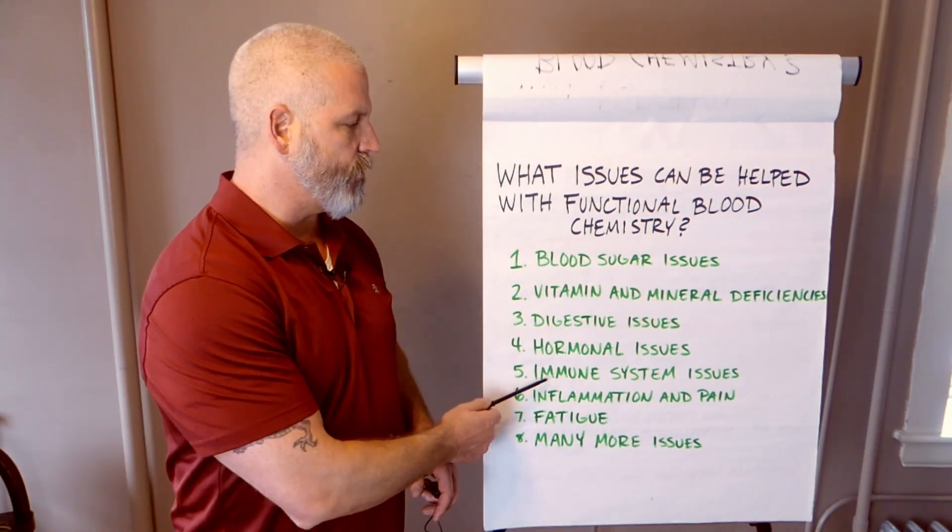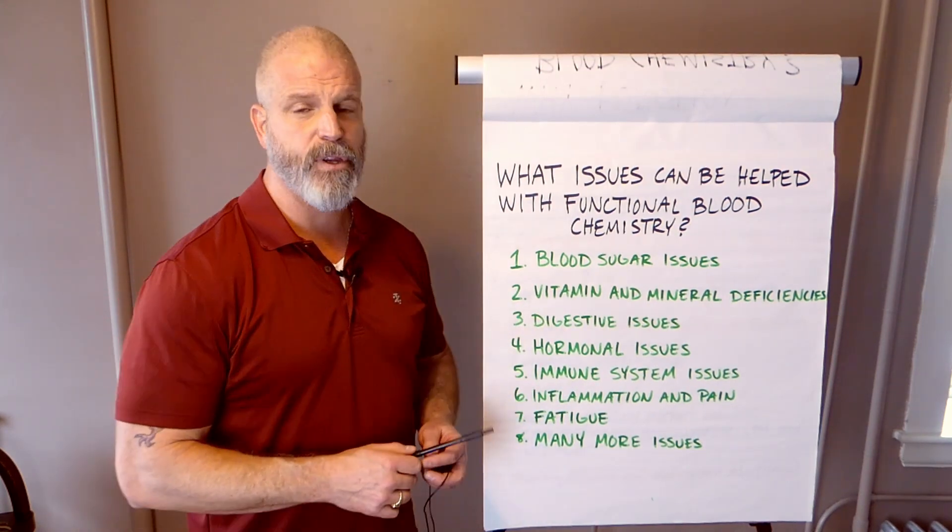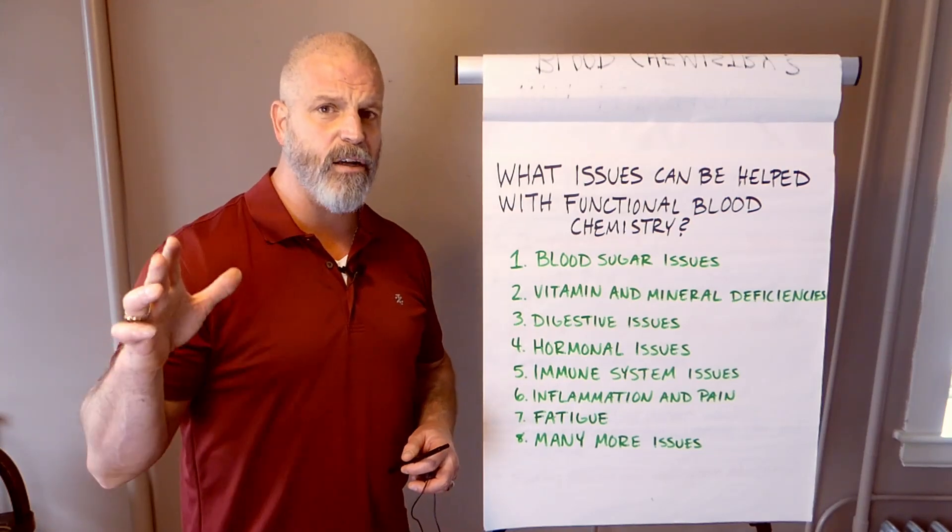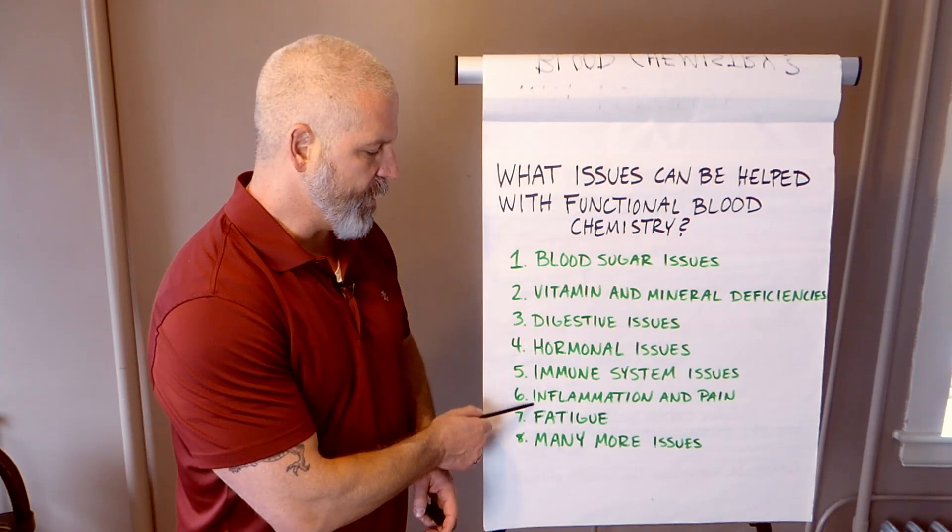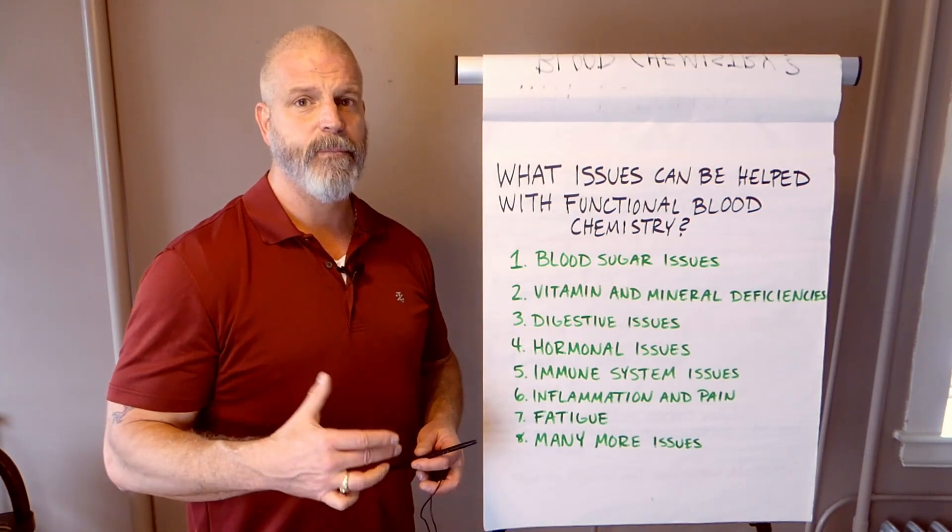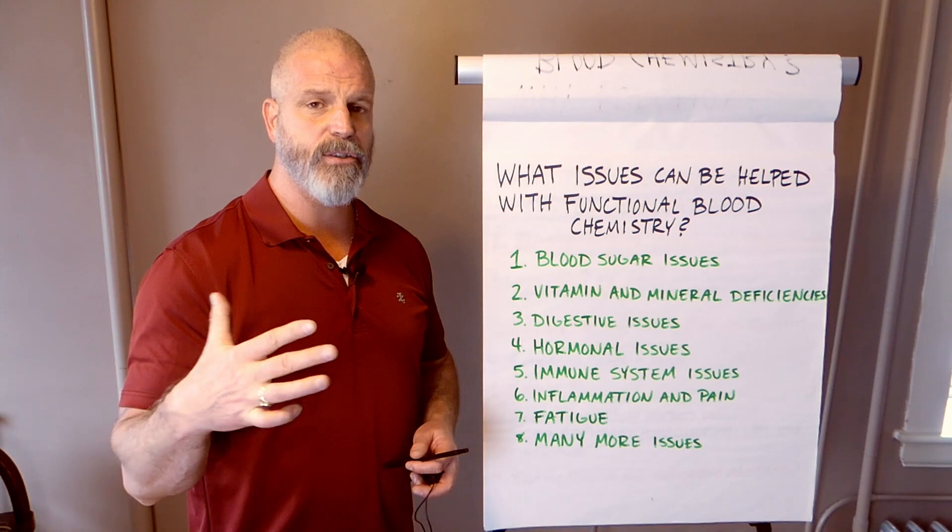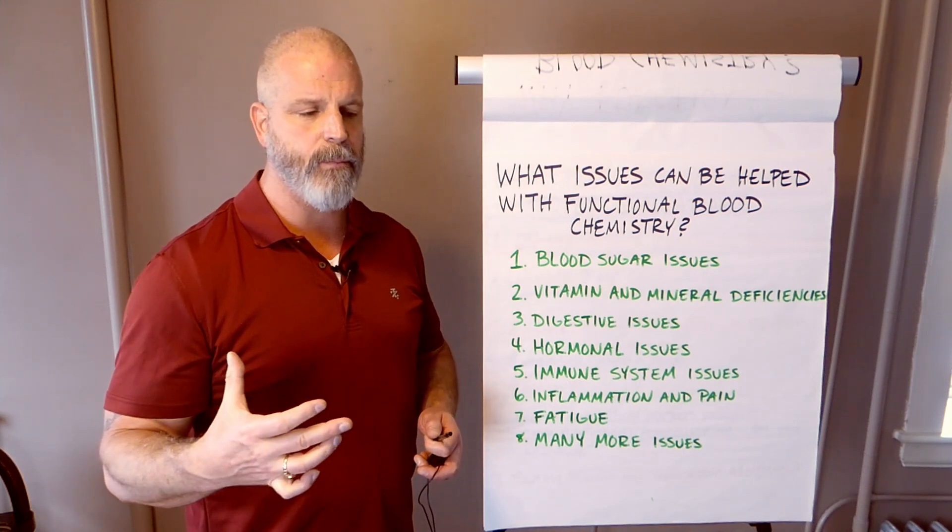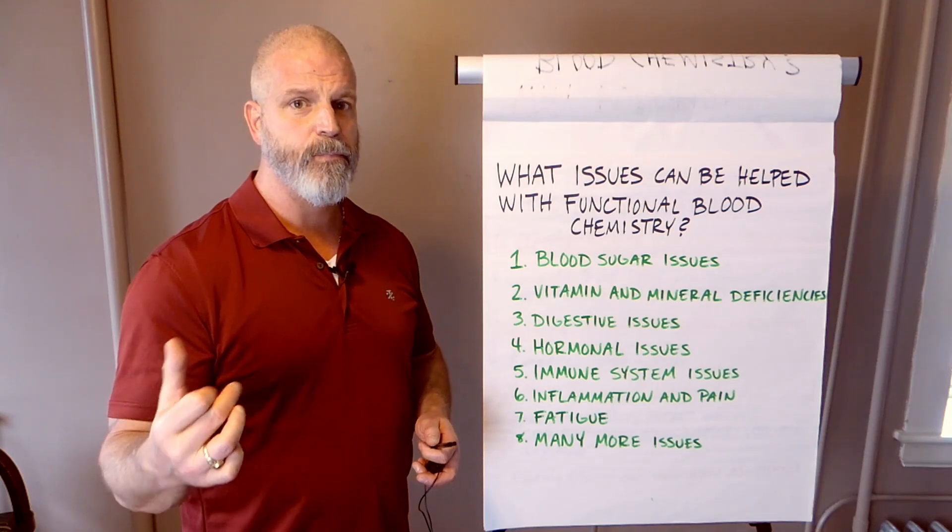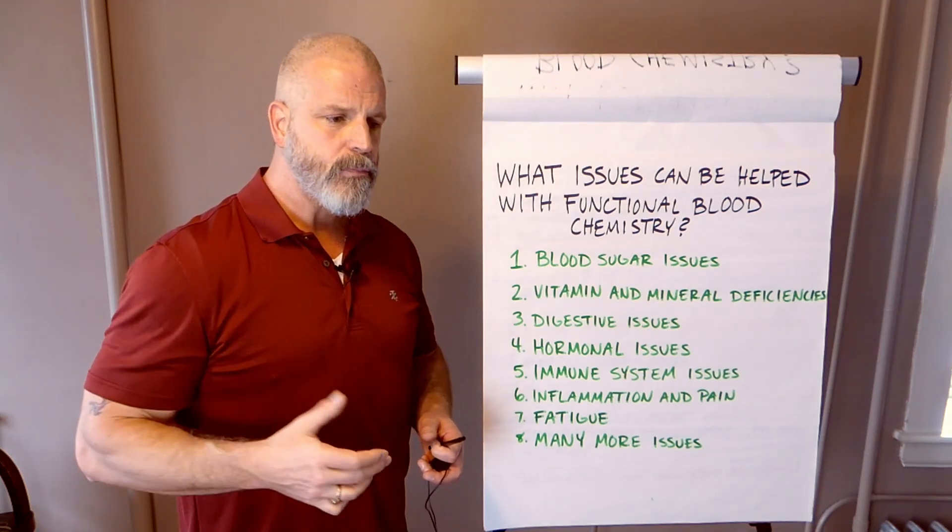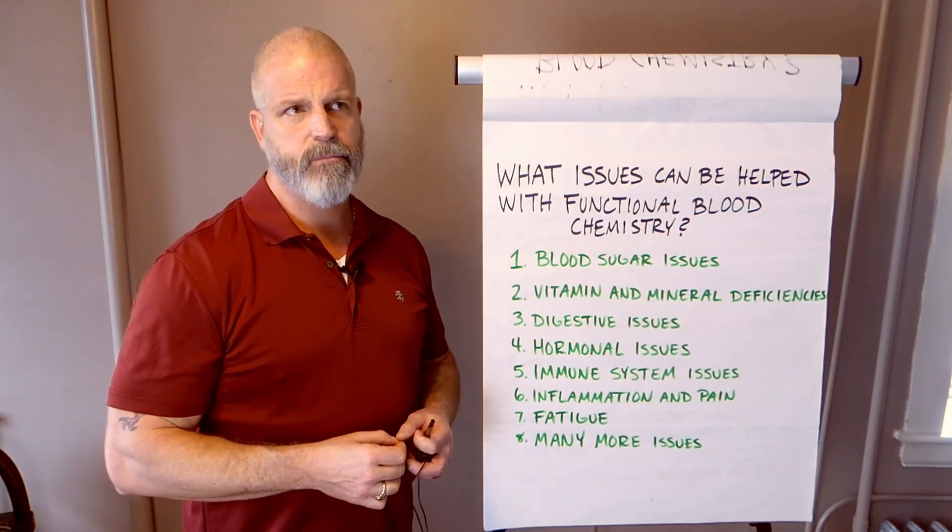Immune system issues. I was already talking about this with digestive issues. But there's a ton of information about the immune system and also inflammation and pain in your blood tests. It's under the white blood cell indices. When your body is fighting an infection or responding to inflammation, you have white blood cells, and they're made up into five specific types.